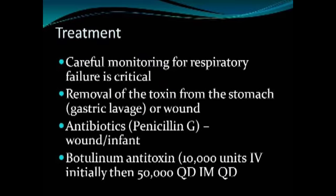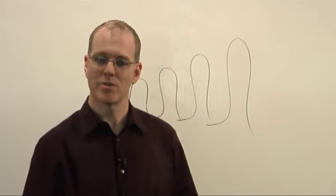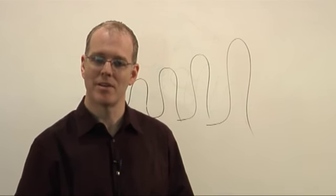Treatment of botulism: be very aware that respiratory failure is likely, so intubate electively rather than in a crisis. If the toxin was ingested, perform gastric lavage to remove it from the stomach. For wound botulism — such as in a heroin user — clean the wound and give penicillin. There is a botulinum antitoxin: initiate with 10,000 units IV, then 50,000 units IM daily until good clinical improvement is seen. With supportive care, most patients who get through the initial period can have quite dramatic recovery.